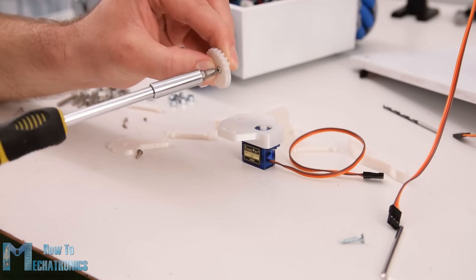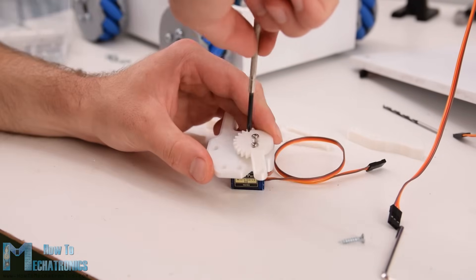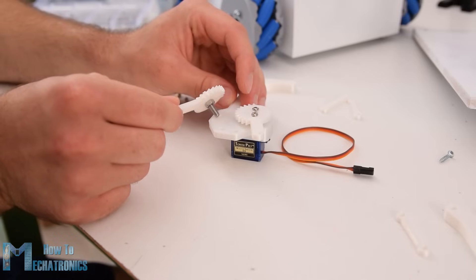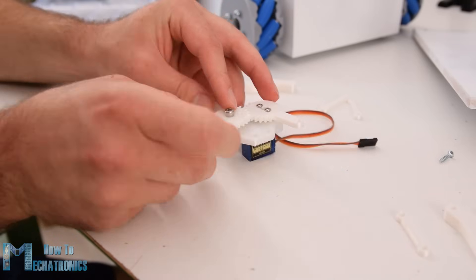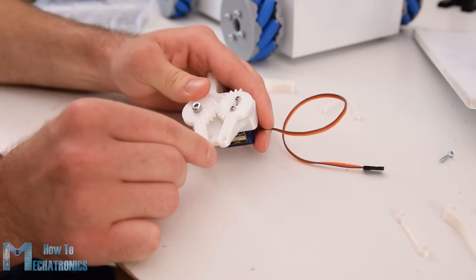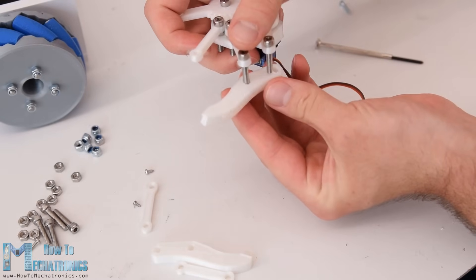Next we need to assemble the gripper mechanism. The gripper is controlled with an SG90 servo motor, on which first we attach a custom designed geared link. We pair this link with another geared link on the other side, which is secured using M4 bolts and nuts. Actually all other links are connected using M4 bolts and nuts.